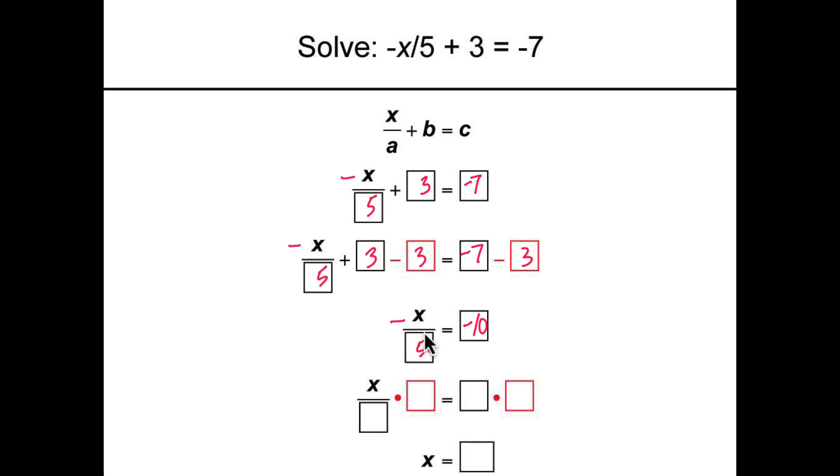This expression involves division which we can undo with multiplication. We get negative x divided by 5 times negative 5, and the reason for the negative is to get rid of this negative sign, equals negative 10 times also a negative 5.